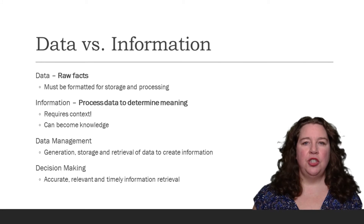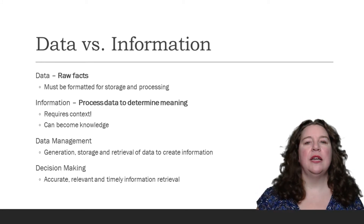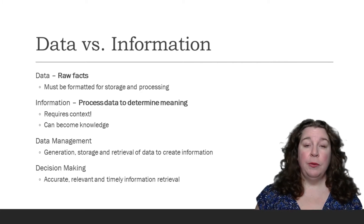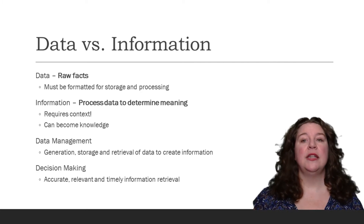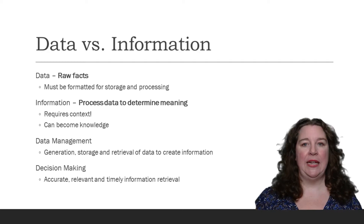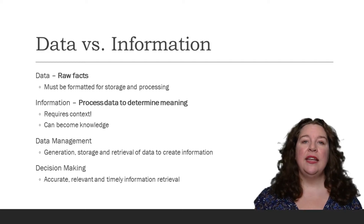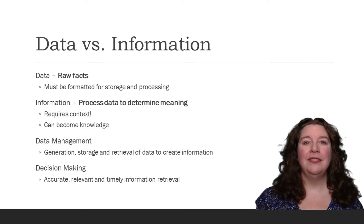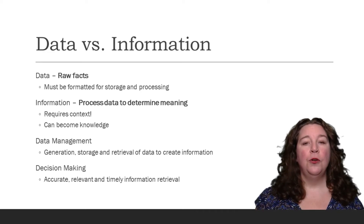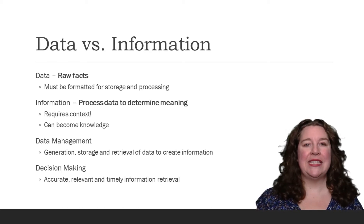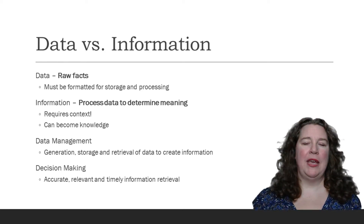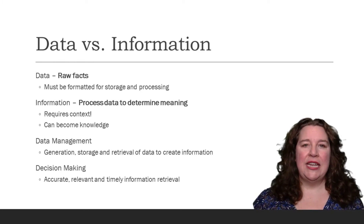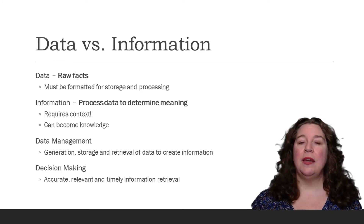Data is just raw facts that don't mean anything until it is processed. Information is data that's been processed to create meaning. It requires context and it can become knowledge. So when you take that 5,000 and say it's how much a new laptop costs, now it has meaning, now it has context — it's information. From that point you can start making decisions, and you can make good decisions if you have good data that's been processed into information.